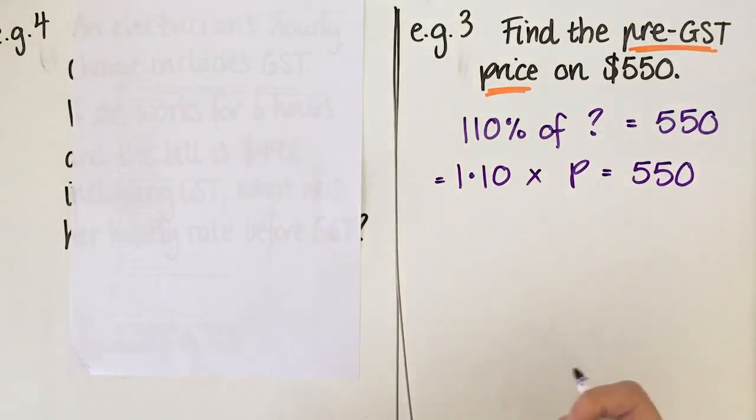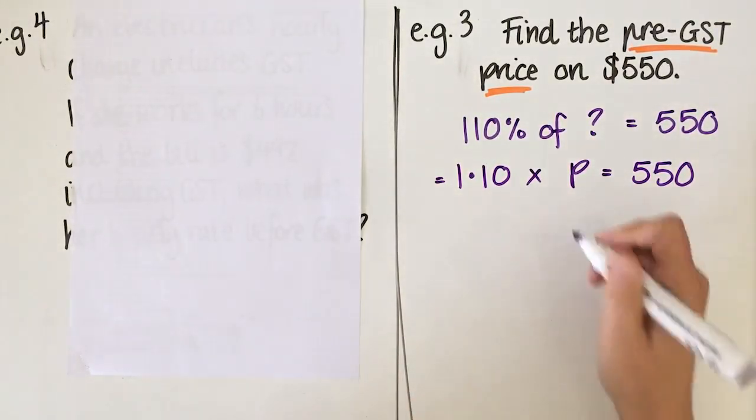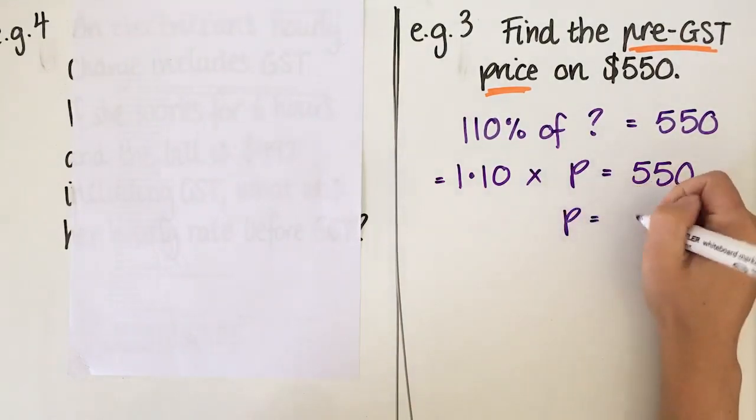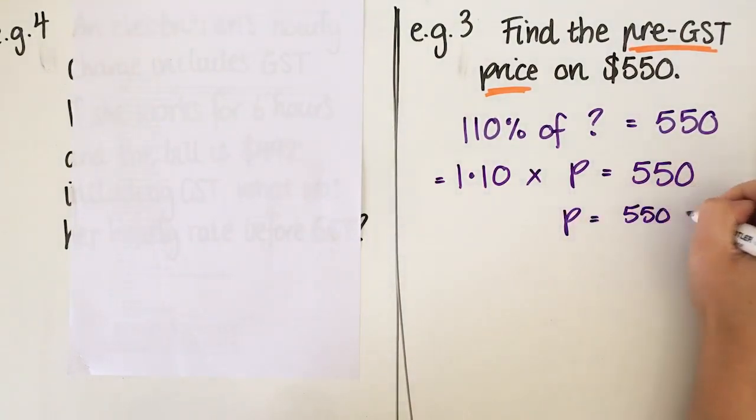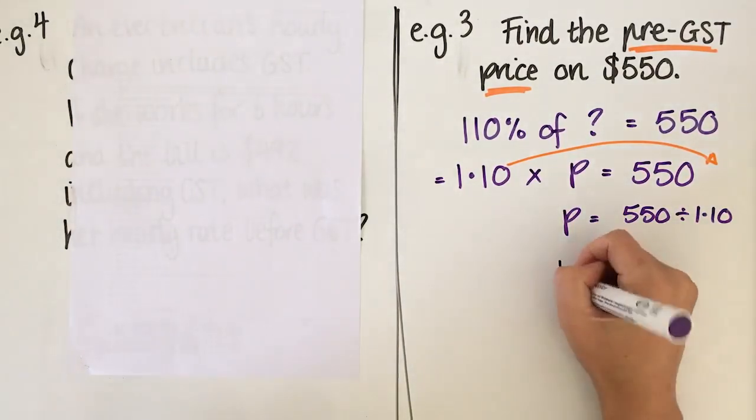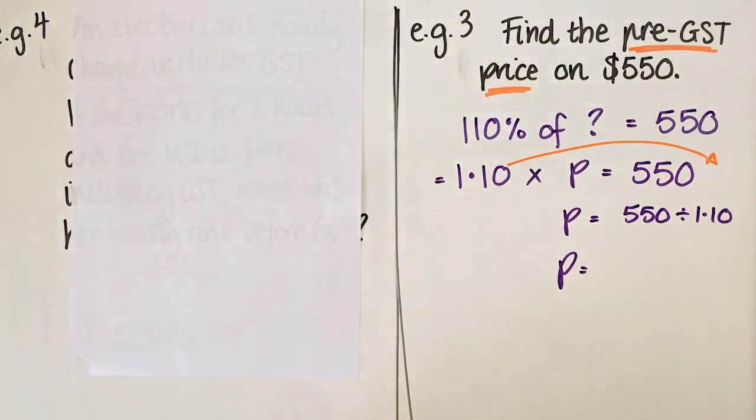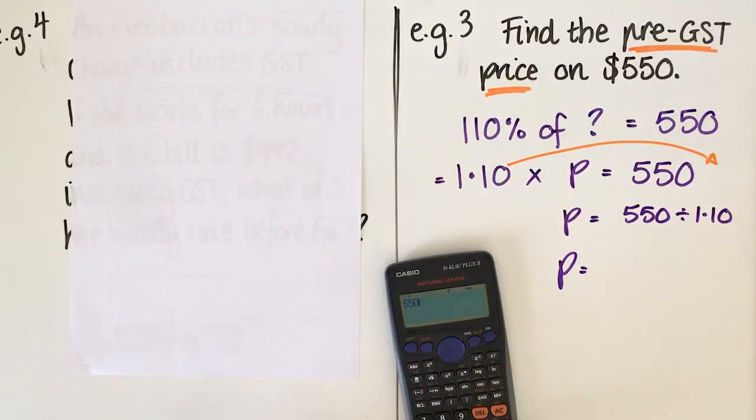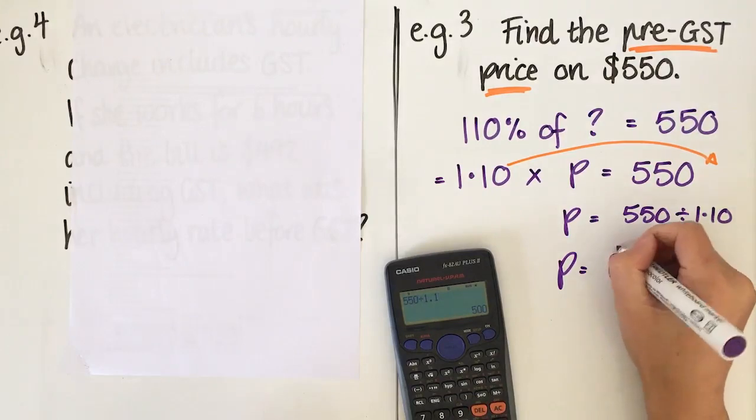Okay, so now what we need to do is actually rearrange this a little bit. So it's going to be P equals 550 divided by 1.10. Okay, because what I'm doing is I'm rearranging this formula to get this over here so I get the price by itself. Okay, then I'm just going to do that on my calculator. I'm going to go 550 divided by 1.1 and I get $500.